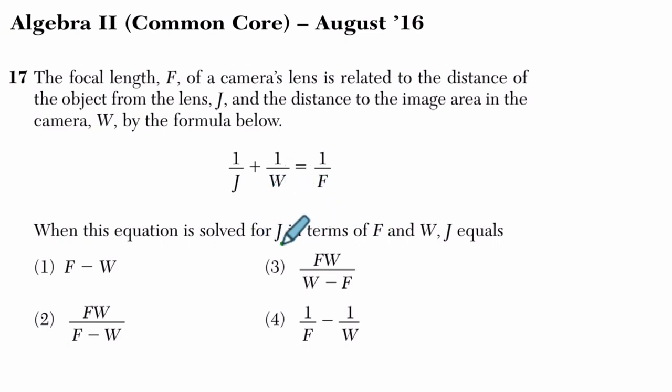We want to solve for j, so get j all by itself. So how am I going to do that? Well, the first thing I'm going to do is multiply. All my variables are in the denominator. I'm going to multiply by the least common denominator. This is j, w, f.